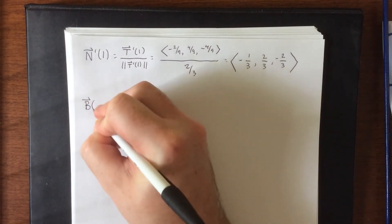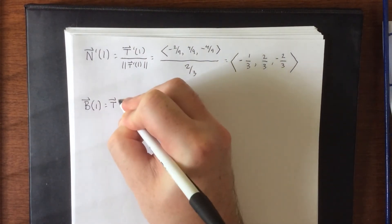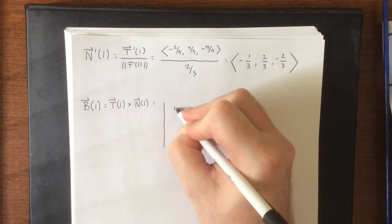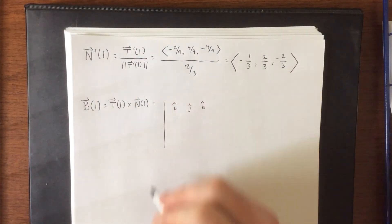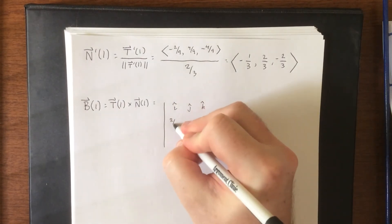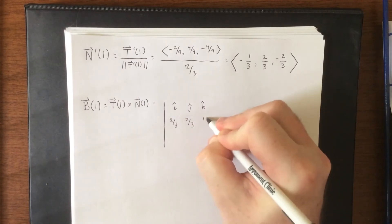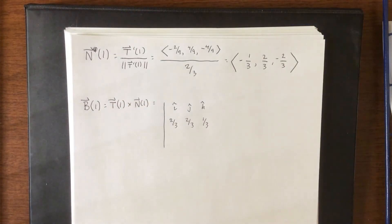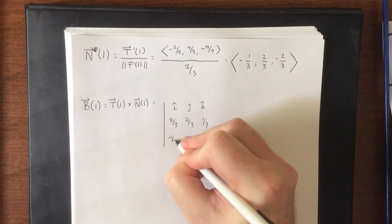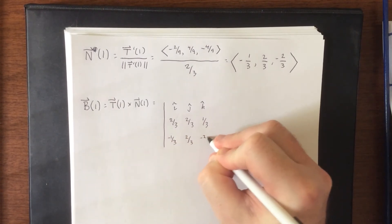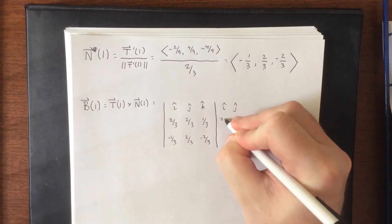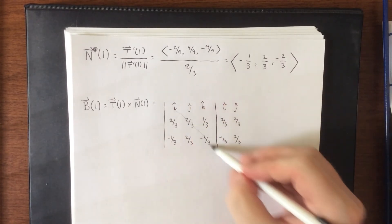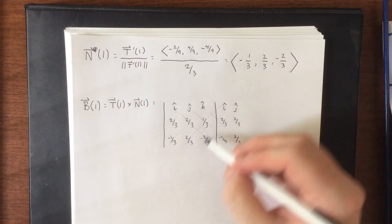So, finally, we'll create our binormal vector evaluated at 1 by taking T of 1 and crossing that with N of 1. So, we'll set up our 3 by 3 determinant, T of 1, I'm grabbing this from the previous page once again, that'll be 2 thirds, 2 thirds, 1 third, and then N of 1, that prime shouldn't be there, please ignore that. N of 1, that'll be negative 1 third, 2 thirds, and negative 2 thirds. Recopy the first two columns. Don't give you a little slashy slashy, hope you don't mind. So, slash, slash, slash, slash, slash, slash, slash, wunderslausch.